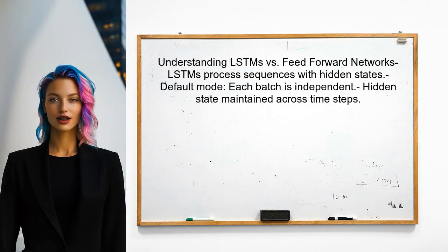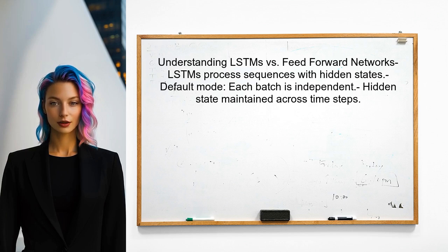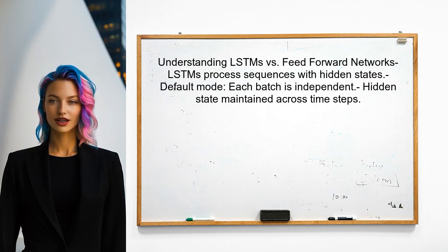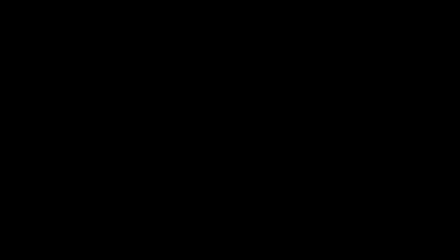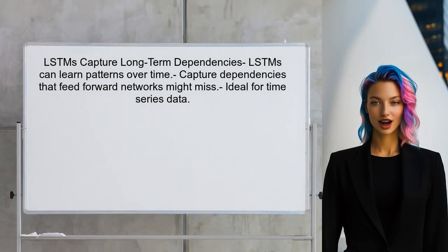To understand the advantages of using LSTMs over feed-forward networks, let's first clarify how LSTMs handle sequences. In the default mode, LSTMs process each batch independently, but they still maintain a hidden state across time steps within a single sequence. This means that even with a fixed input length, LSTMs can learn patterns over time, capturing dependencies that a feed-forward network might miss.